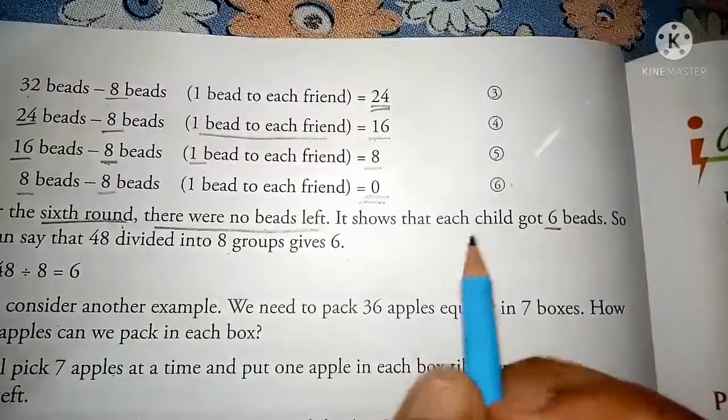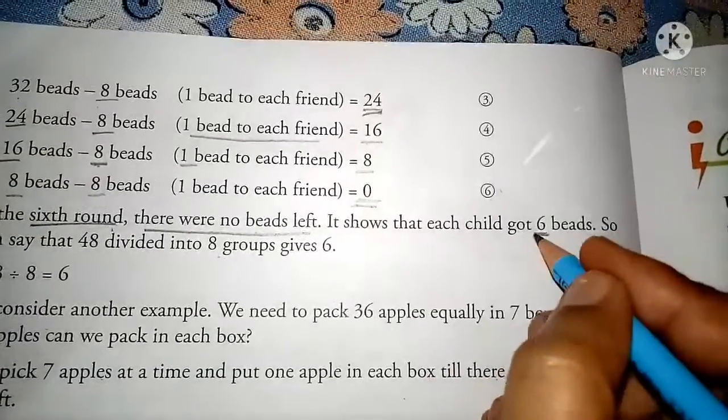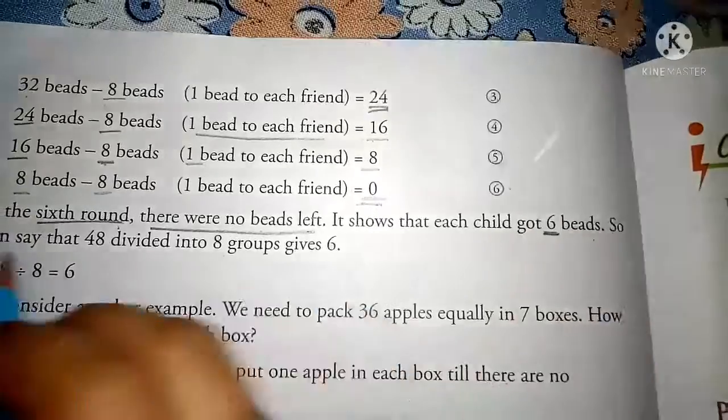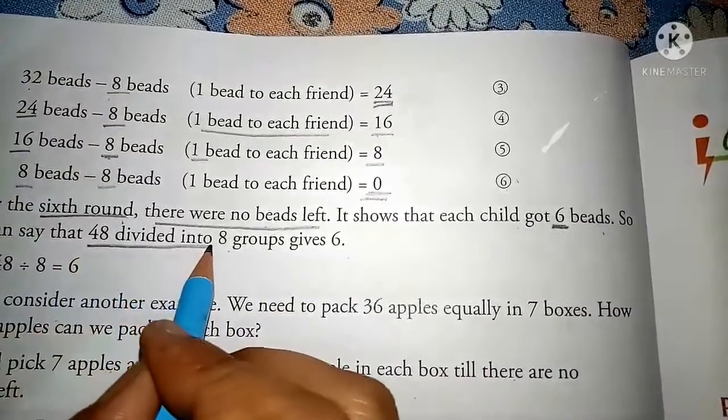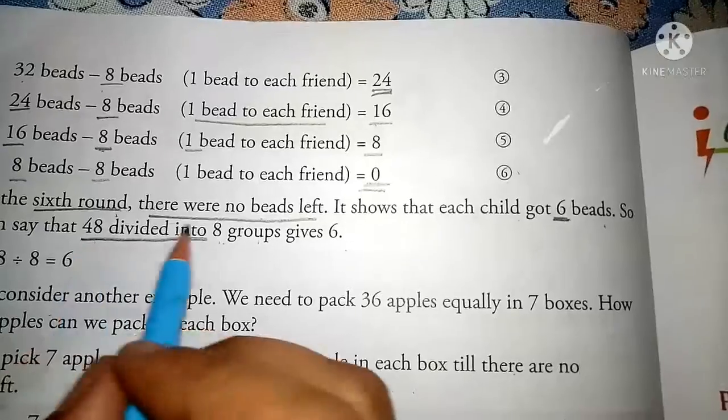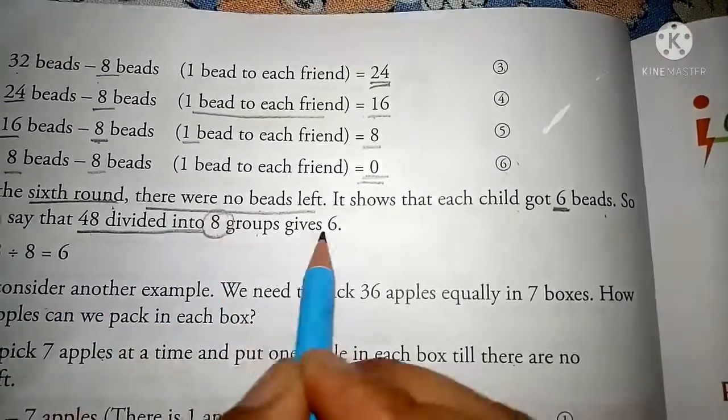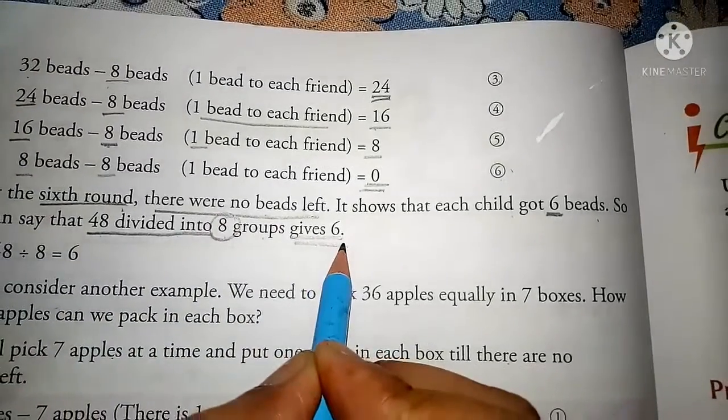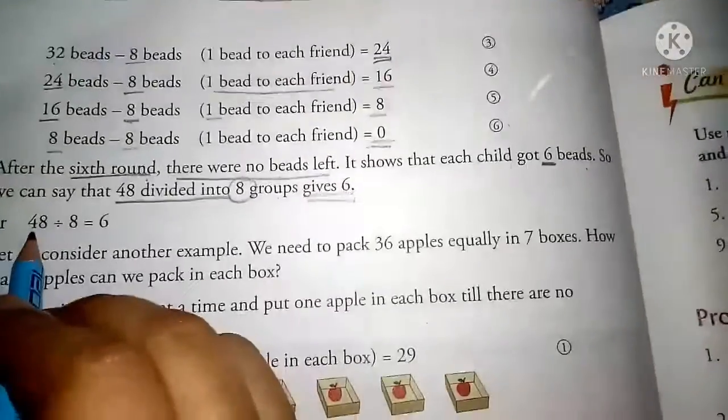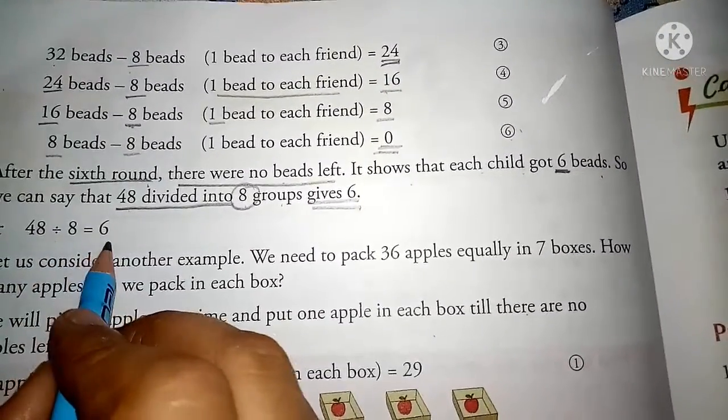It showed that each child got 6 beads. So we can say 48 divided by 8 equals 6.